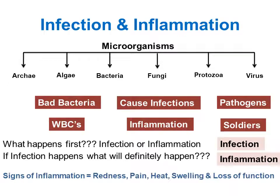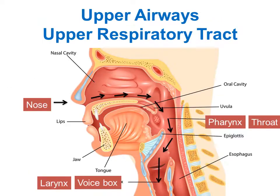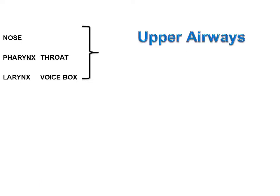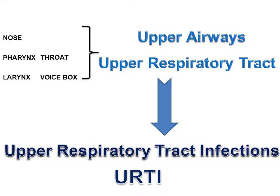Inflammation is denoted by the suffix -itis. For example: tonsillitis, pharyngitis. Nose, pharynx and larynx are present above the neck, therefore called as upper airways or upper respiratory tract. If there is infection in the upper respiratory tract, it is called upper respiratory tract infection or URTI.